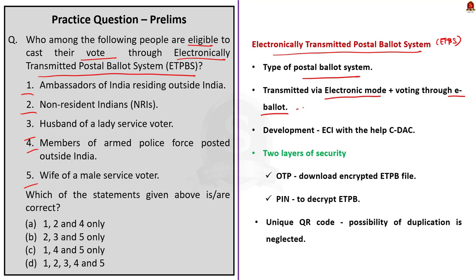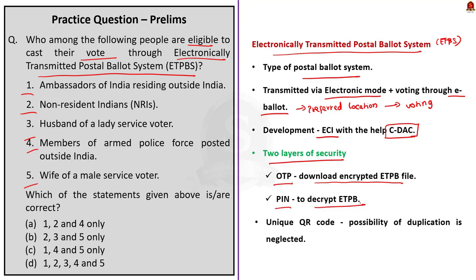ETPBS is a fully secured system with two layers of security. Firstly, an OTP is required to download an encrypted electronically transmitted postal ballot (ETPB) file. Secondly, a PIN is required to decrypt the ETPB, maintaining secrecy and security. Every E-ballot also has a unique QR code, so the possibility of duplication of votes is eliminated.